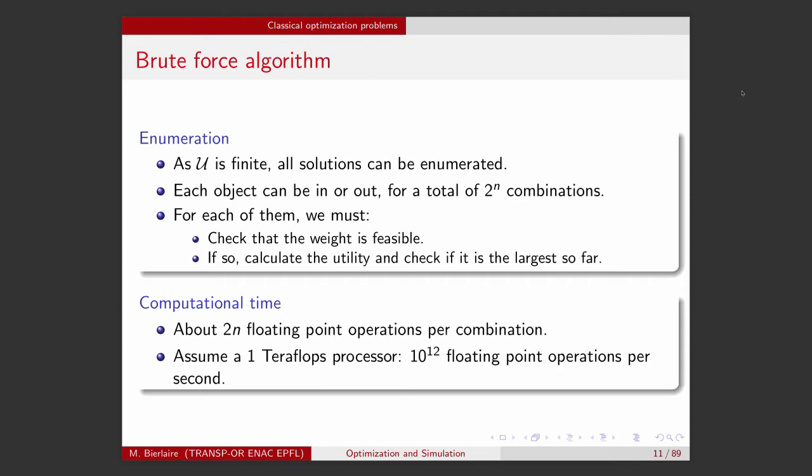The brute force algorithm consists of the following: enumerate all 2 to the N combinations. For each one, first check that the weight of the combination is feasible — if not, ignore it. If it is feasible, calculate the utility and check if it is the largest generated so far; remember the largest one. When the enumeration is finished, we know which one is the best.